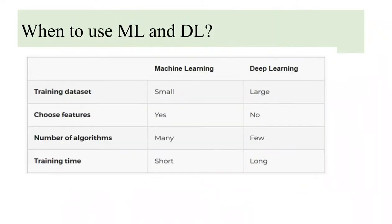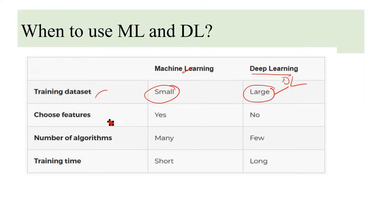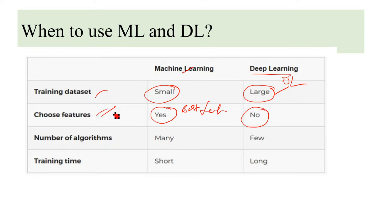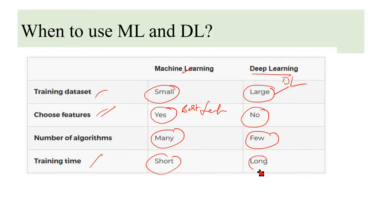When to use machine learning versus deep learning: use machine learning when the training dataset is small; use deep learning when the training dataset is very large. In machine learning, you must manually choose the best features using feature selection techniques. In deep learning, the system selects features itself through permutation and combinations between different layers. Machine learning has fewer algorithms and less training time compared to deep learning.